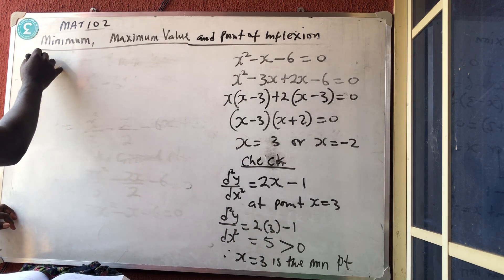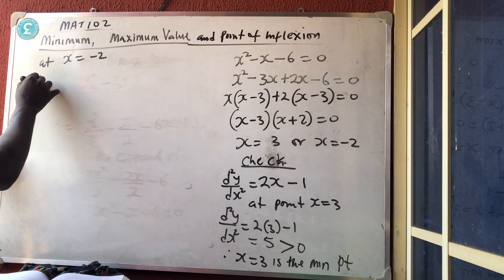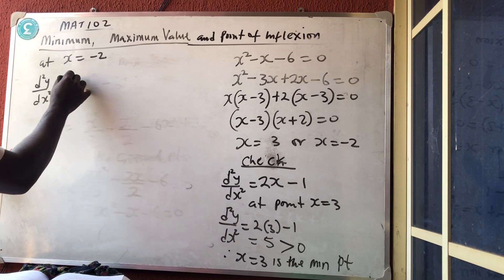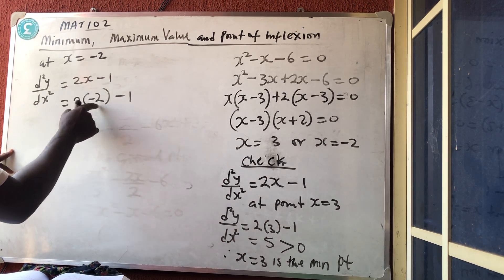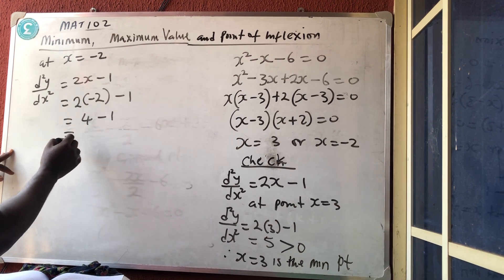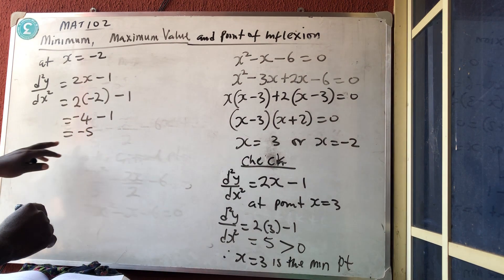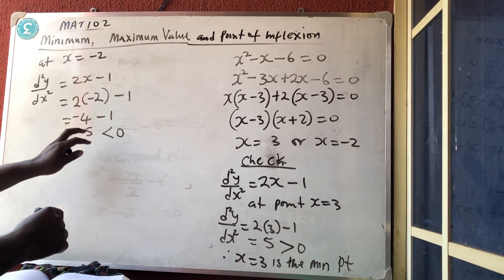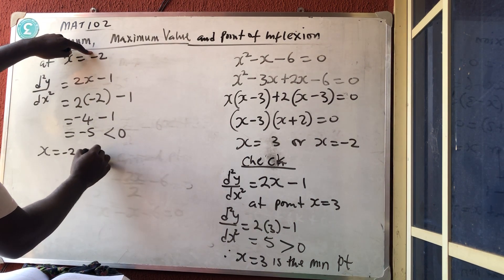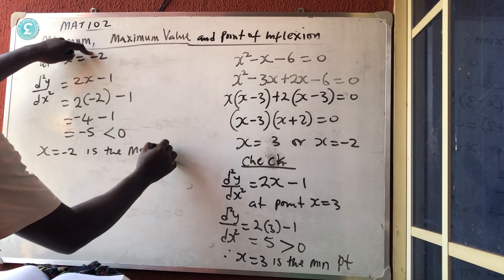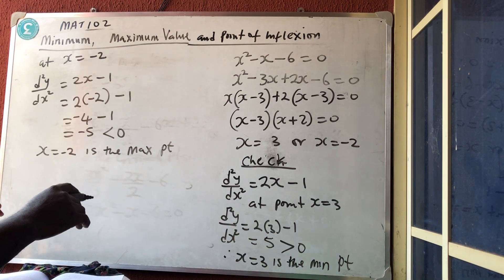Now let's check the next one. At x equal to minus 2: d²y/dx² equals 2(minus 2) minus 1, which is minus 4 minus 1, which is minus 5. And minus 5 is less than 0. Since minus 5 is less than 0, x equal to minus 2 is the maximum point. I told you that less than 0 gives us maximum point, and greater than 0 gives us minimum point.